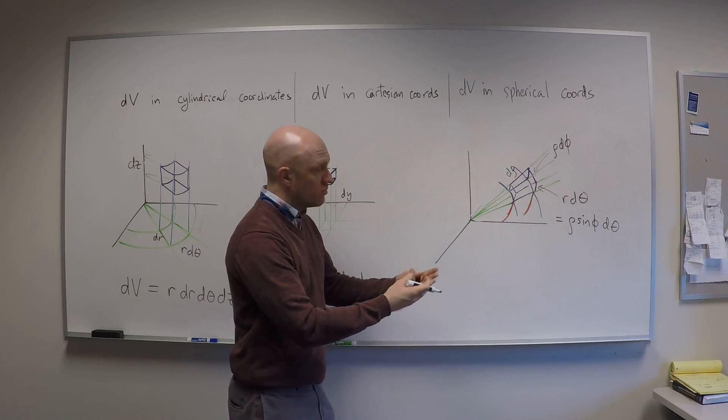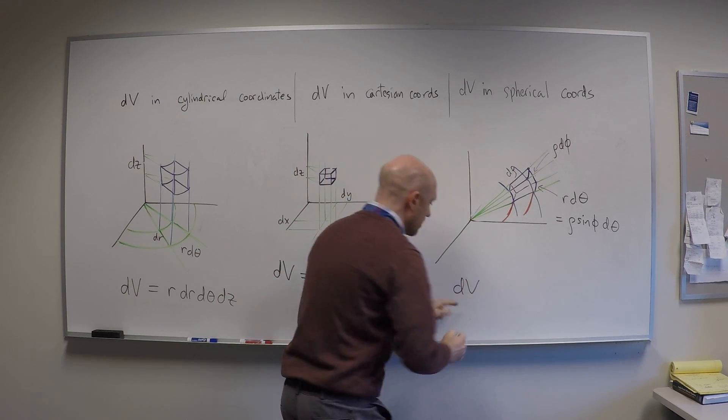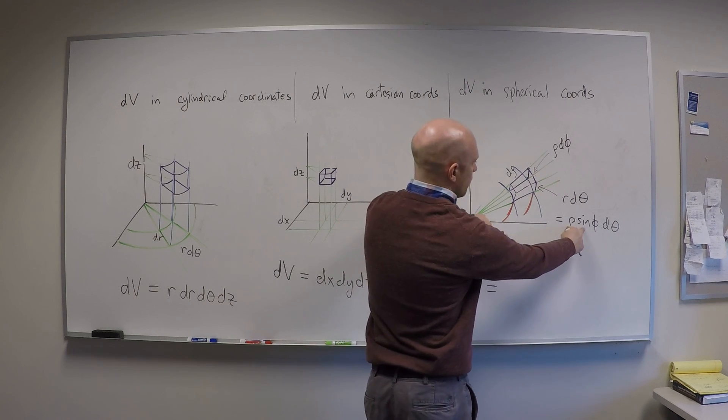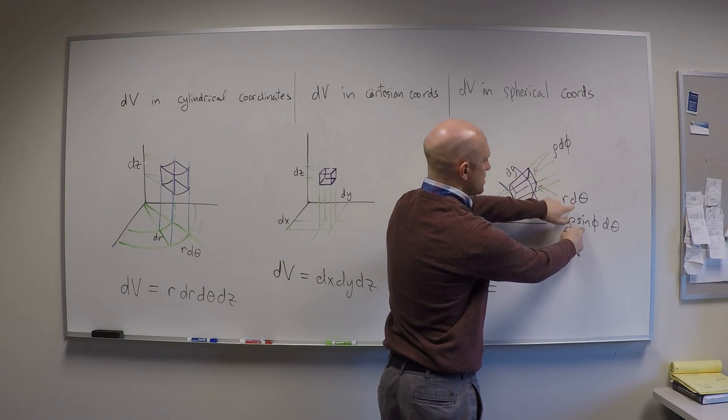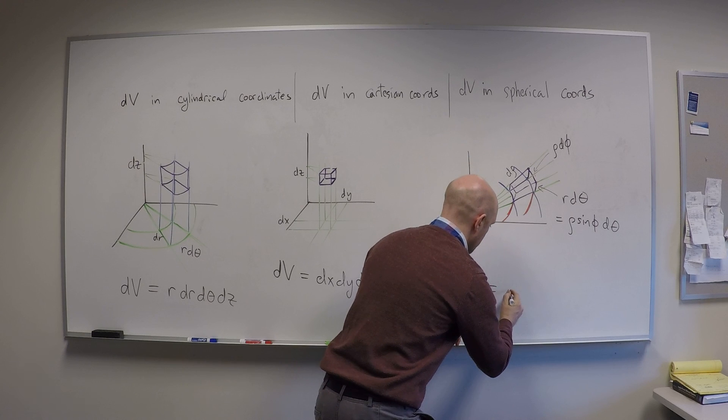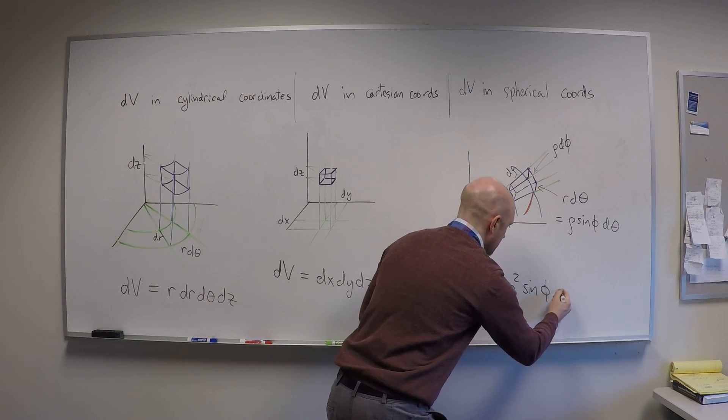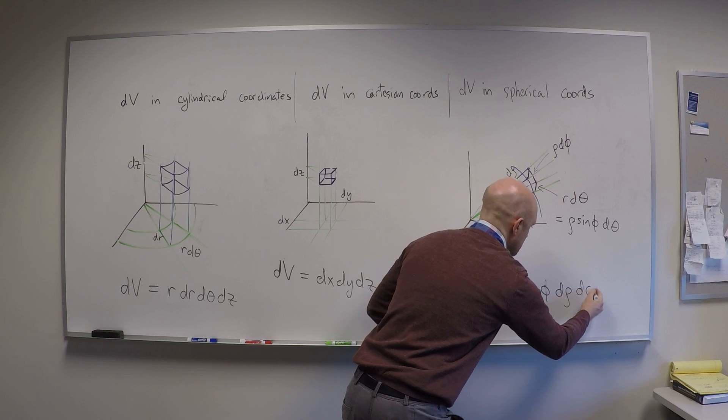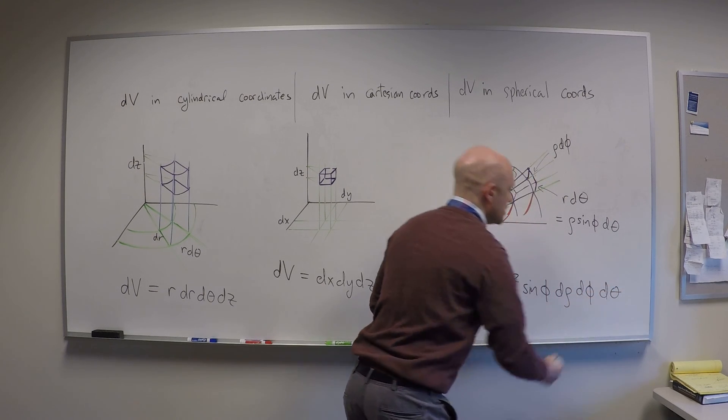So multiply them all together, and you get your volume element for spherical coordinates, which is dv. And that's going to be rho sine phi times rho d phi times d rho. So I get rho squared, sine phi, d rho, d phi, d theta.